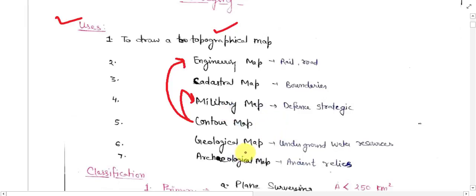Geological map is used where geological data has been shown. An archaeological map shows ancient relics or the ancient sites.